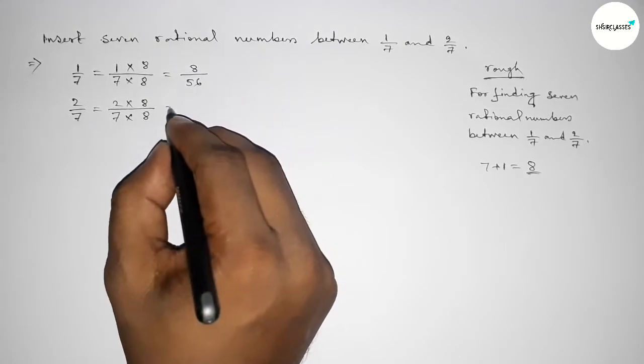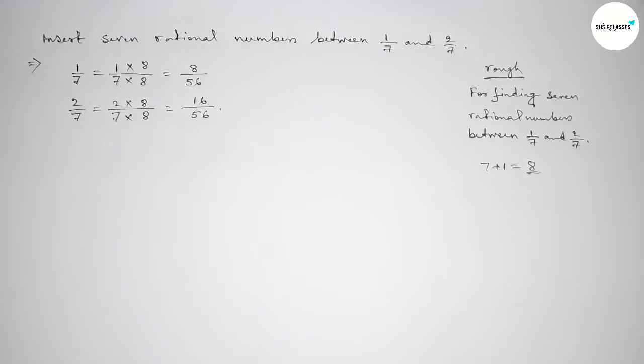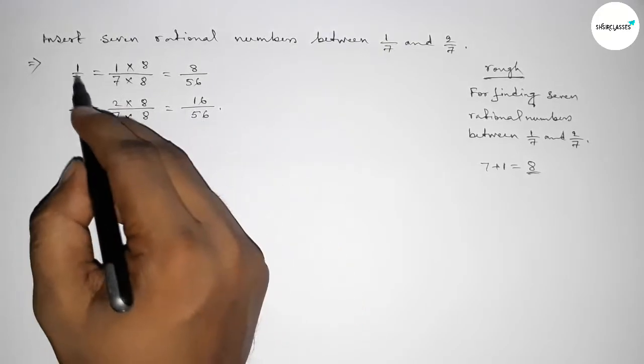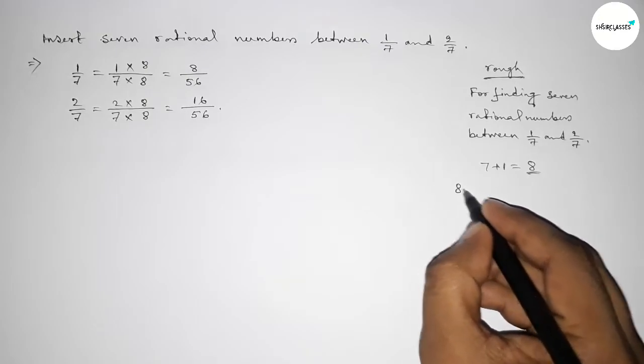So here equal to 8/56 and here 16/56. This is our equivalent. Now between 8 to 16 we can get 7 natural numbers between 8 to 16.